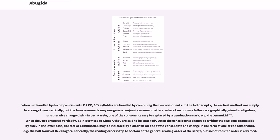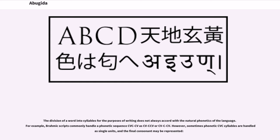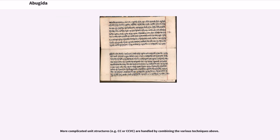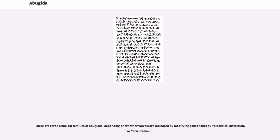Generally, the reading order is top-to-bottom or the general reading order of the script, but sometimes the order is reversed. The division of a word into syllables for writing does not always accord with the natural phonetics of the language. Brahmic scripts commonly handle a phonetic sequence CVCCV as CVCCV. More complicated unit structures, for example CC or CCVC, are handled by combining the various techniques above.